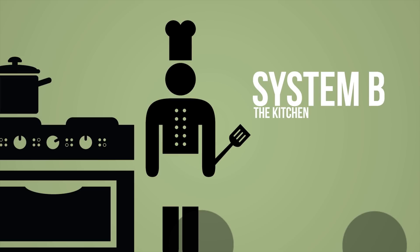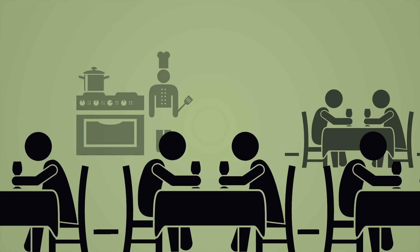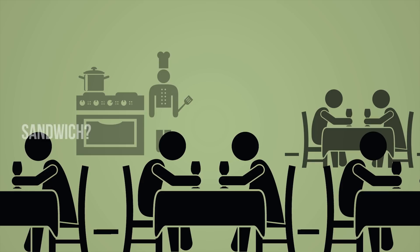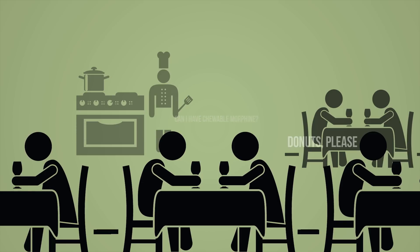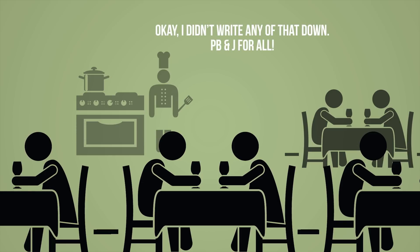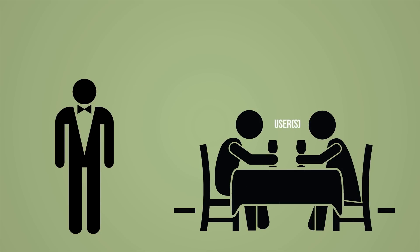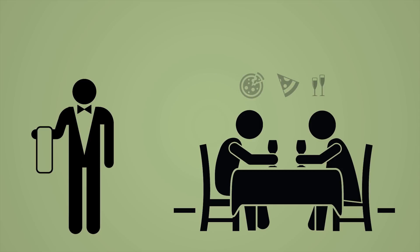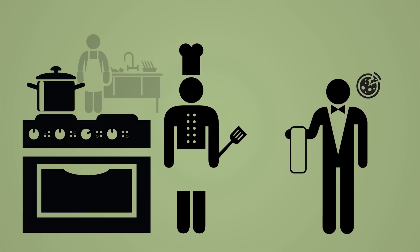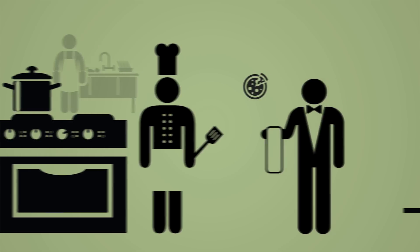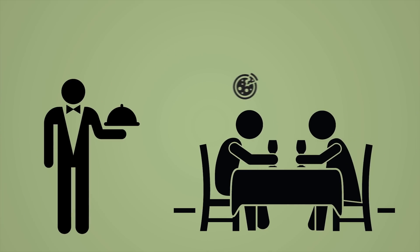System B doesn't want to just let System A directly access all of its information — there are security and liability issues. Having all these different customers trying to talk to the cook directly, unless timed near perfectly, has the potential to be more confusing than helpful. Enter the waiter, or in this analogy, the API. The waiter can serve the customer with a menu of subroutine definitions, protocols, and tools that the customer can use to achieve his task. The customer then sends that request through the waiter to the kitchen.